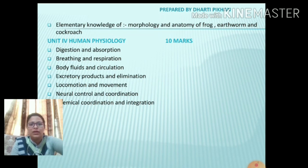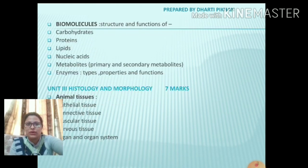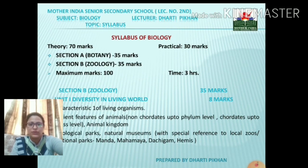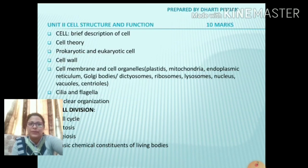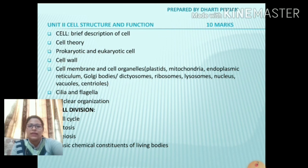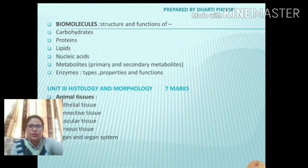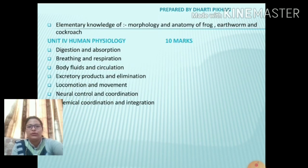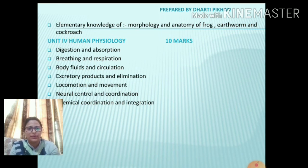So these are the total four units of the zoology section. To recap: Unit 1 is diversity in the living world — 8 marks. Unit 2 is cell structure and function — 10 marks, the basic unit of the zoology section. Unit 3 is histology and morphology — 7 marks. Unit 4 is human physiology — 10 marks. This is all about the syllabus of the zoology section and we will continue in the next lecture. Have a great day. Thank you.